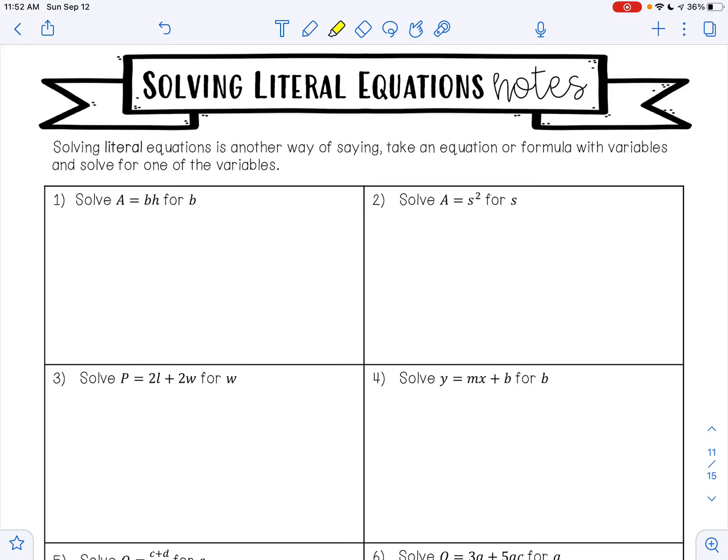So I want to get B alone. Right now B is being multiplied by H. How do we undo multiplication? Division. So I am going to divide both sides by H. I'll have A divided by H is equal to B. B is alone, so we have solved for B. This is your answer. If you would like, you could write it so that B is in front, but either way this is correct. Your answer is B equals A divided by H.